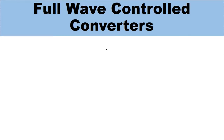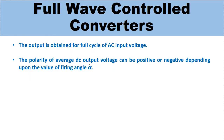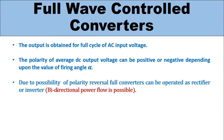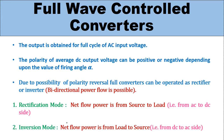Some important points about full wave control rectifiers: the output is obtained for the full wave cycle of AC input voltage. The polarity of the average DC output voltage can be positive or negative depending on the value of firing angle alpha — also called delay angle. Due to the possibility of polarity reversal, full wave converters can be operated as a rectifier or as an inverter, meaning bidirectional power flow is possible. In rectification mode, net power flows from source to load (AC to DC side); in inversion mode, net power flows from load to source (DC to AC side).